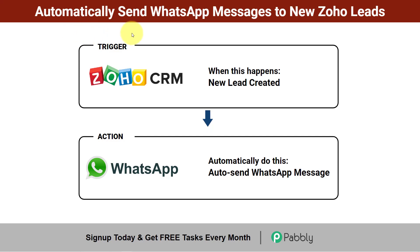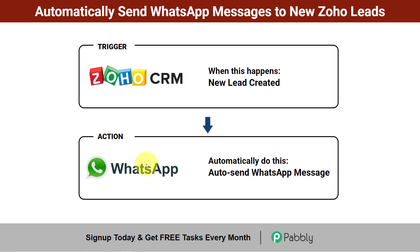In this video, I will show you how to automatically send WhatsApp messages to new Zoho leads. Every time a new lead is created in Zoho CRM, I want to automatically send a WhatsApp message to that lead without doing anything manually. For sending the WhatsApp messages, I am going to use the Interact application, which is an official API of WhatsApp. Come with me and I'll show you how to set this automation step by step.